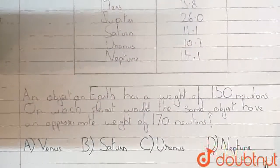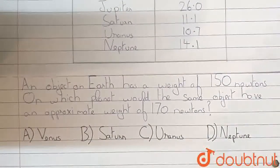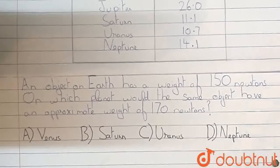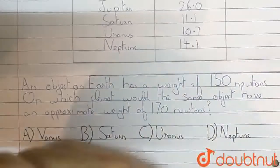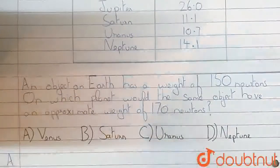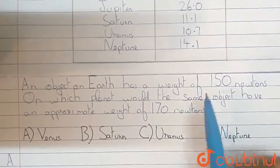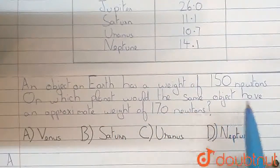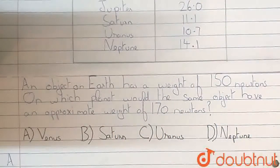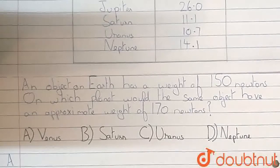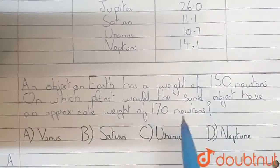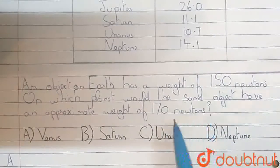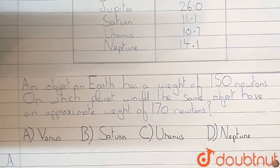So this is the question. An object on Earth has a weight of 150 newtons. On which planet would the same object have an approximate weight of 170 newtons? Firstly, using this information given to us — that on Earth the object has a weight of 150 newtons — we must find out the mass of the object. And using that mass, we can find out the acceleration due to gravity which will result in 170 newtons for that specific mass.